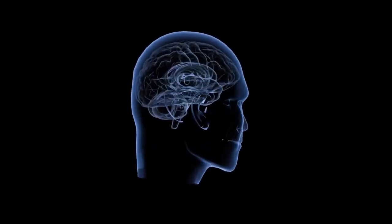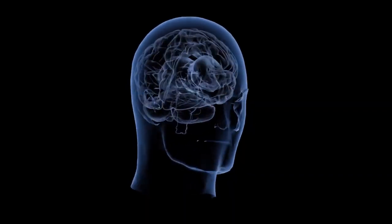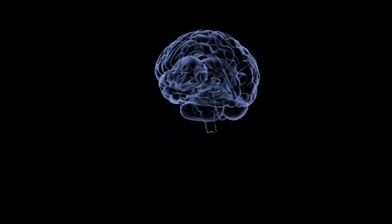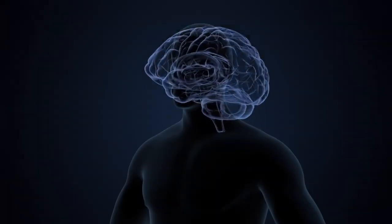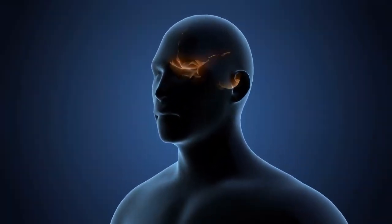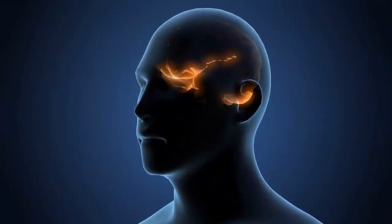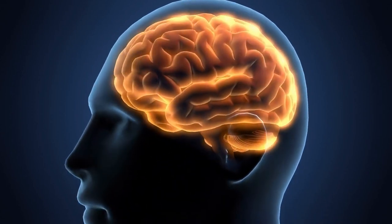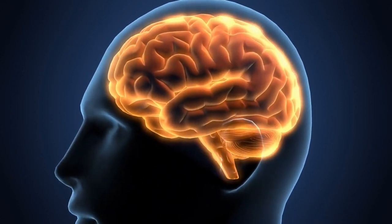The brain is the most important organ, which controls the whole body. There are parts of the brain that control movement of the arm, neck, speech, or vision. If the tumor is near one of these areas, when we take the tumor out there is a potential for damage to these areas.